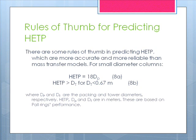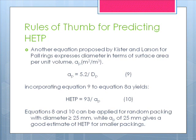These rules of thumb are based on Paul Rings performance. Another equation proposed by Kista and Larsen for Paul Rings expresses diameter in terms of surface area per unit volume, or A_P. A_P is equal to 5.2 over D_P, as shown in Equation 9. Incorporating Equation 9 into Equation 8a yields HETP equal to 93 over A_P, shown as Equation 10.